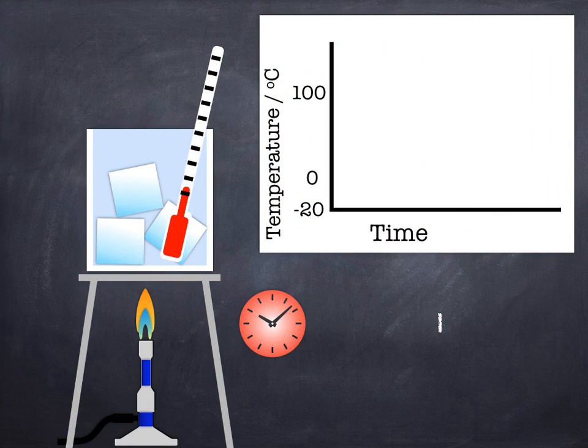Well imagine this setup here: you've got some ice which is at minus 20 degrees, you put it in a beaker over a Bunsen burner and you stick a thermometer in there and you have a stop clock to time your experiment.